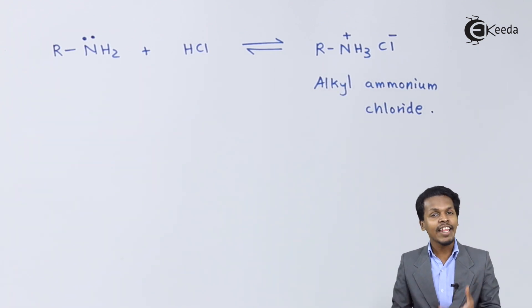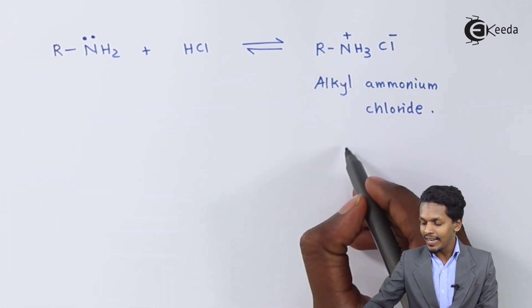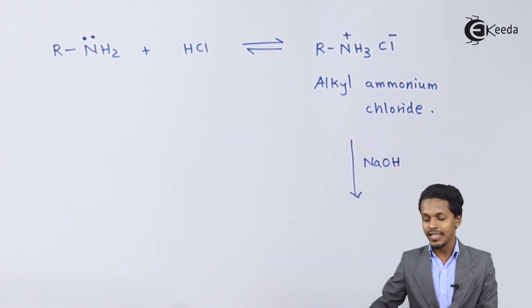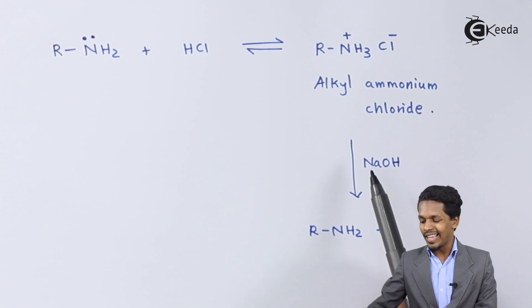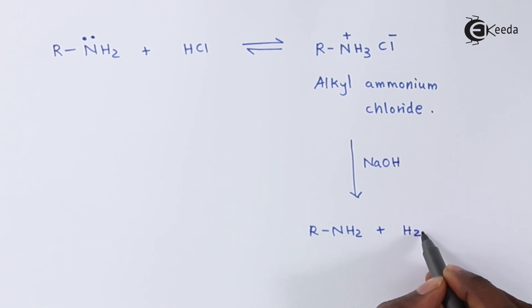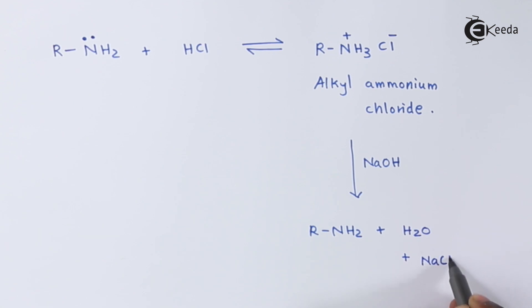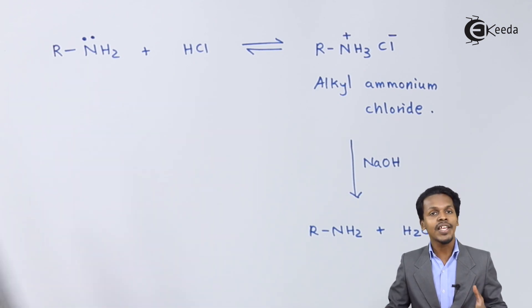Suppose we have a mixture of an amine and a non-basic organic compound, and we want to regenerate or recover the amine. We take the alkylammonium chloride product and add NaOH — a strong base. This gives back R-NH2, along with H2O and NaCl as by-products. This is how we regenerate the amine and also separate it from the non-basic organic compound.